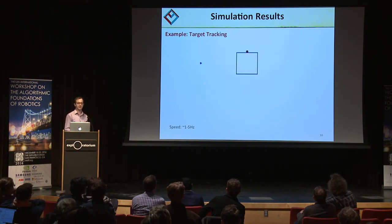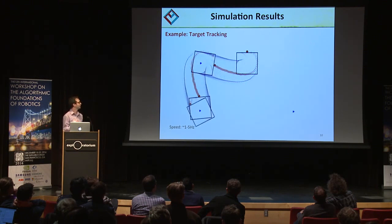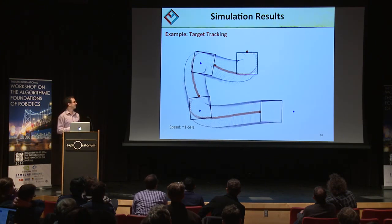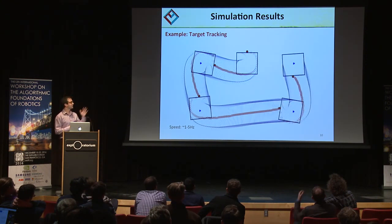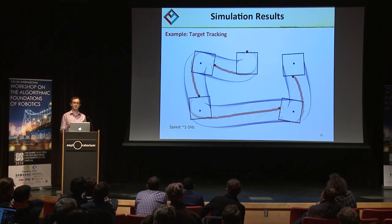We also implemented target tracking results, where the goal is to push the object towards a target. Once it reaches that target within an assertion tolerance, it goes on to tracking the next target. This was enough to convince us that the MPC framework can solve these challenges of hybridness and underactuation. But the key challenge is how do we do this on the real robot — how do you transform this into something you can solve online?